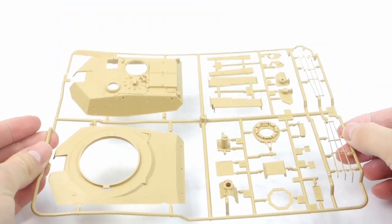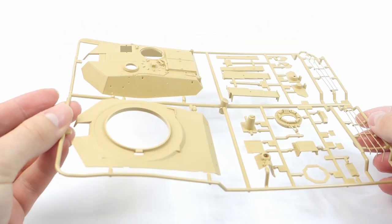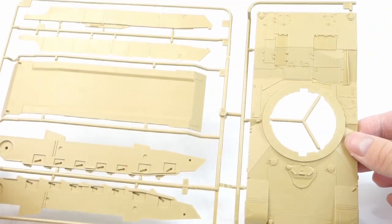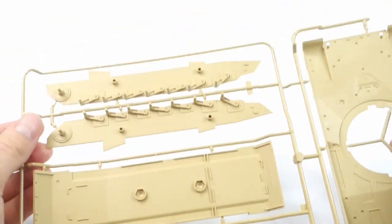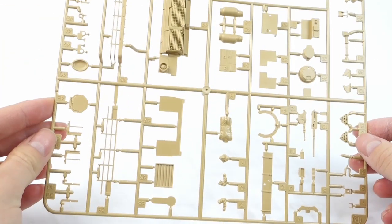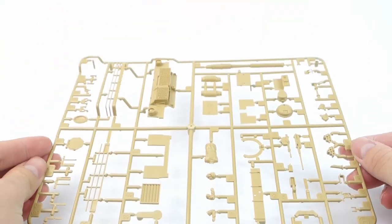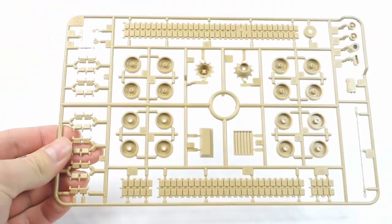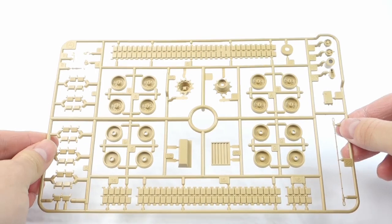The box contains five sprues. The first one includes main components of the turret and its details. The second one includes all main components of the hull. The third one contains the gun barrel and other smaller details, and the two last sprues are identical and contain all main parts of the running gear like tracks and wheels.